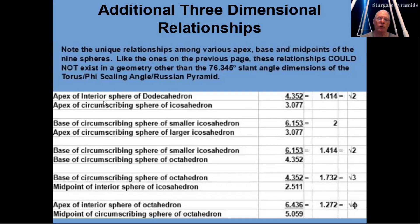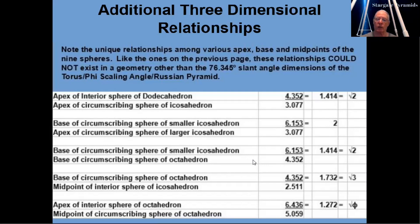First, the apex of the interior sphere of the dodecahedron divided by the apex of the circumscribing sphere of the icosahedron equals 1.414, or the square root of 2. Second, the base of the circumscribing sphere of the smaller icosahedron divided by the apex of the circumscribing sphere of the larger icosahedron equals 2. Similarly, the base of the circumscribing sphere of the smaller icosahedron divided by the base of the circumscribing sphere of the octahedron equals 1.414, or the square root of 2.